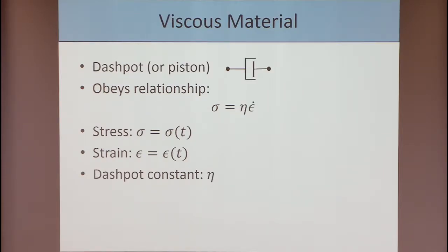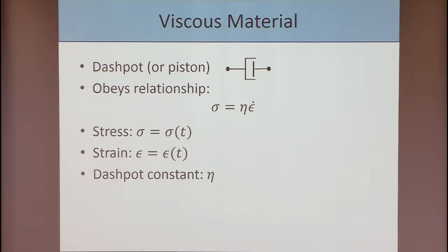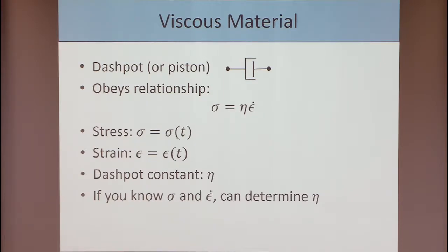Now let's talk about what it means to be a viscous material. A viscous material can be represented by what's called a dashpot — more familiarly, a piston like in your car. A dashpot obeys the relationship sigma equals eta times epsilon-dot, where epsilon-dot is the derivative of the strain and eta is the dashpot constant. Again, it's typically an unknown parameter, but if you knew your stress and strain rate at some time instance, you could determine the dashpot constant.